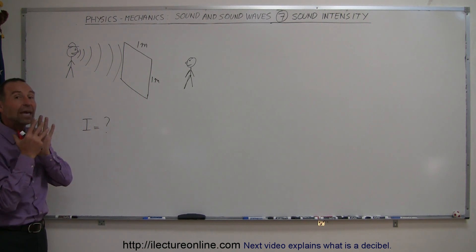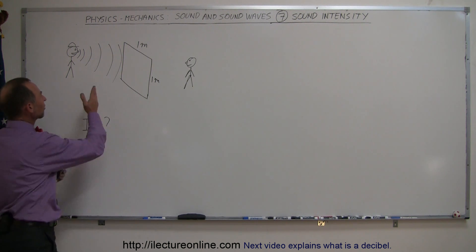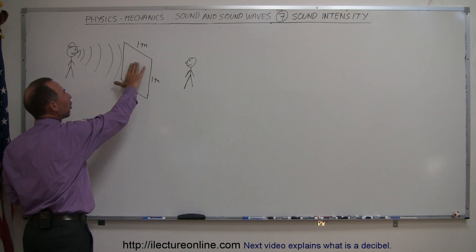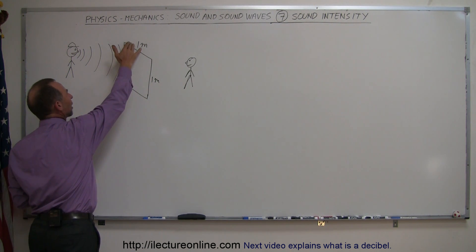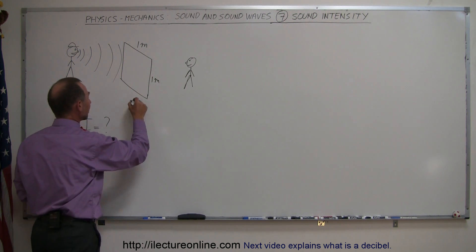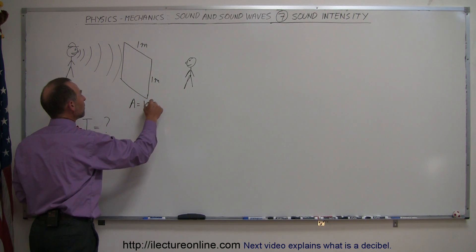Now that sound contains energy, and in some later video I'll show you how to calculate the energy contained in the sound wave. But let's say that sound then travels and reaches a window, and let's say the window is open and has a cross-sectional area of 1 meter by 1 meter, or 1 meter squared. So the area of this window is equal to 1 meter squared.